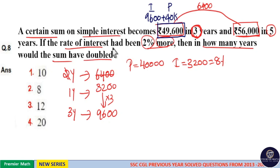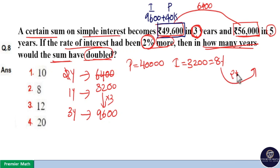Now, the question asks: if the interest rate increased by 2%, then in how many years would the sum have doubled?